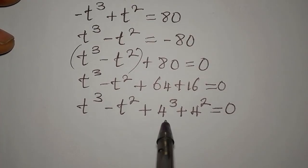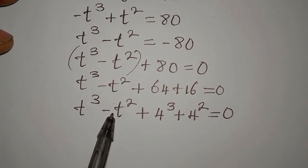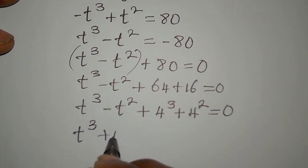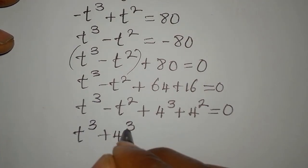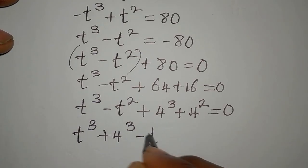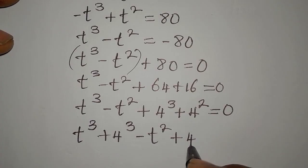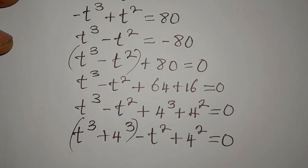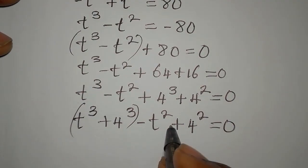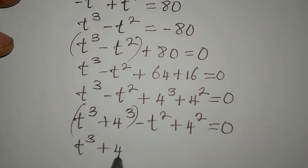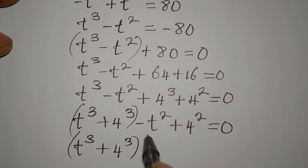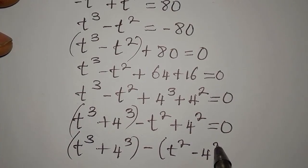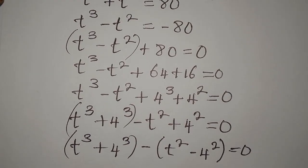Now we can bring terms together: t cubed plus 4 cubed, then minus t squared minus 4 squared, all equal to zero. Grouping these, we have the addition of two cubes and the difference of two squares. For the difference of squares part, we factor out the negative: minus open bracket t squared minus 4 squared, giving us negative times negative 4 squared.